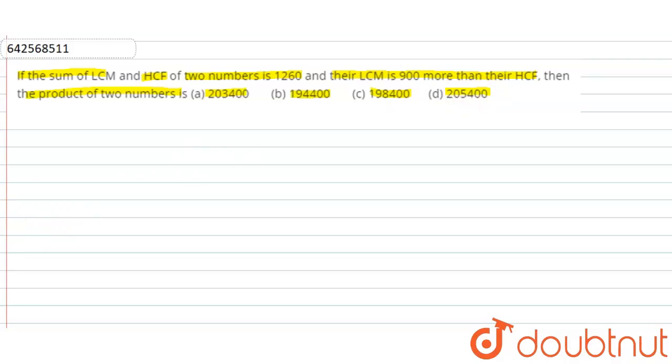In the solution, the very first thing is given that the sum of LCM and HCF is 1260. We will let the LCM as x and HCF as y. Their sum is equal to 1260. Also, the LCM (that is x) is 900 more than the HCF, so x = 900 + y.